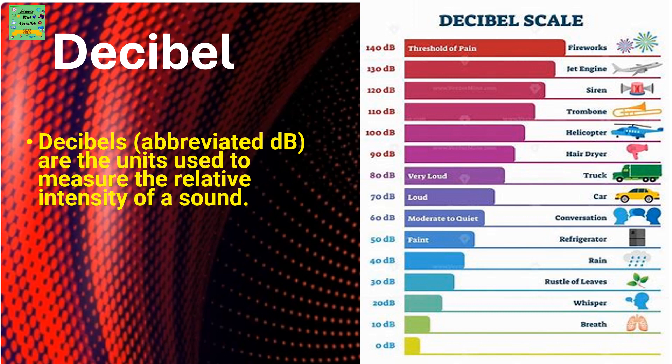Decibels, abbreviated as dB, are the units used to measure the relative intensity of a sound. For example, just as you have kilometers for measuring distance, you have decibels for measuring the intensity of a sound.